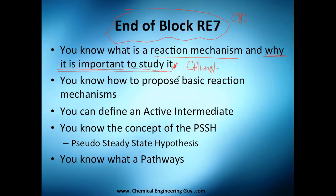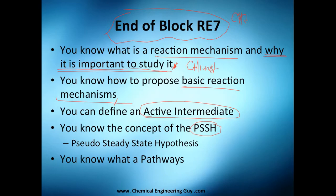You know how to propose a basic reaction mechanism — at least the most basic ones. You can define an active intermediate, which is actually simple. You know the concept of PSSH, the Pseudo-Steady State Hypothesis, which states that the sum of all rates of reaction of the intermediates must be zero. And you know what a pathway is — essentially a map showing all the reactions involved in a mechanism.